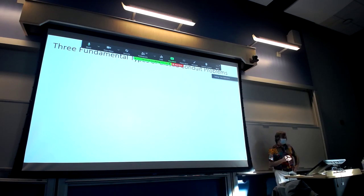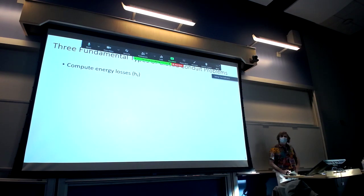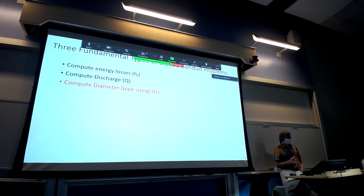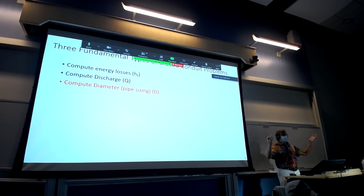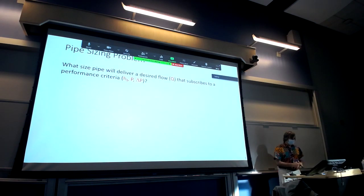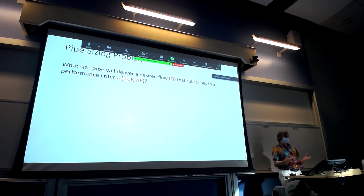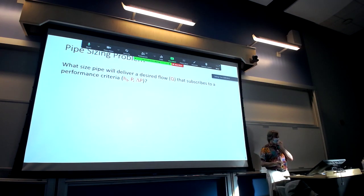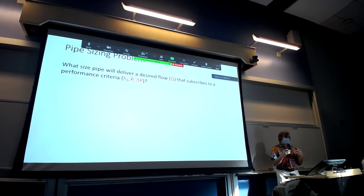There are three fundamental types of closed conduit problems. The first is computing energy losses, covered before Thanksgiving. The second is the discharge problem, covered last class. This class we're going to talk about the pipe sizing problem. All problems involving pressure and closed conduit flow basically fit into one of these three categories. The pipe sizing problem is: what size pipe will deliver a desired flow Q that meets performance criteria? Those criteria are typically a certain friction loss, pressure, or change in pressure.